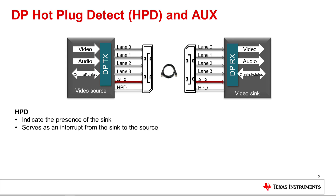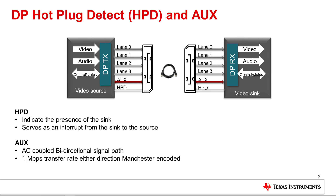A sink requests the source to read the sink's DPCD register using the aux interface and to take an appropriate action. The aux is a bi-directional, half-duplex differential interface at 1 megabits per second data rate. Aux communication starts when a sink is plugged and carries management and device control data for the main link using VESA-EDID and VESA-MCCS standards.